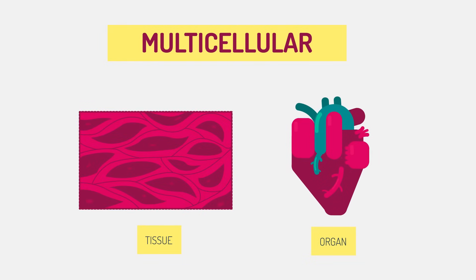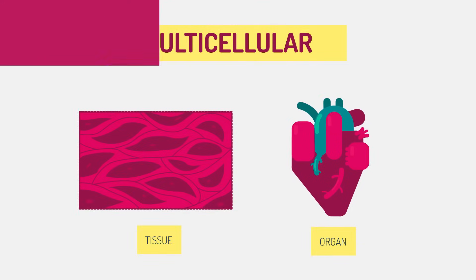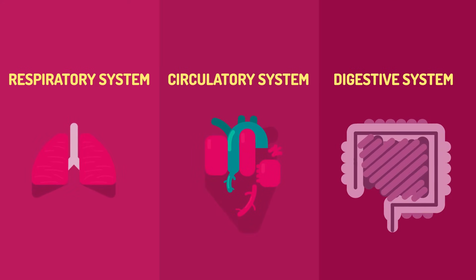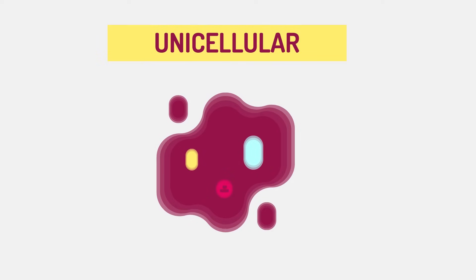Groups of cells then function in the same way to form tissues or organs. These specialized organs carry out our life processes, working together in systems.